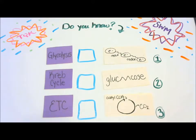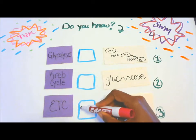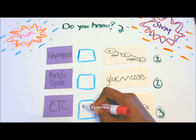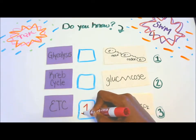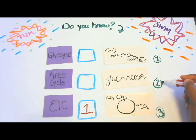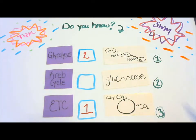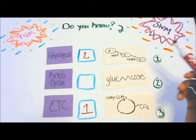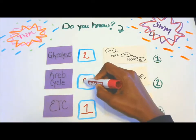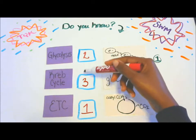So how did you do? Number one is the electron transport chain. Number two is glycolysis. Number three is the Krebs cycle. So the order is two, three, one.